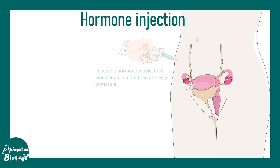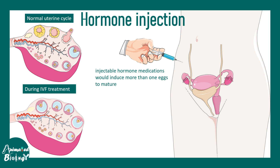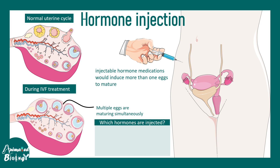The first step is hormone injection. An injectable hormone ensures that more than one egg matures. Normally only one egg matures in one cycle, but during IVF this treatment causes multiple primordial follicles to develop into Graafian follicles, so multiple eggs are produced in the ovary. This hormone cocktail is nothing but FSH and LH.